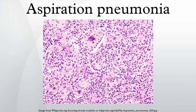The location of aspiration pneumonia is often gravity dependent and depends on the patient's position. Generally, the right middle and lower lung lobes are the most common sites of infiltrate formation due to the larger caliber and more vertical orientation of the right mainstem bronchus. Patients who aspirate while standing can have bilateral lower lung lobe infiltrates. The right upper lobe is a common area of consolidation in alcoholics who aspirate in the prone position.